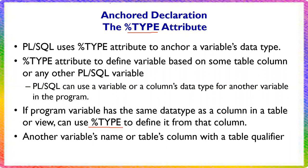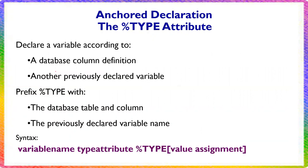The syntax for anchor declaration is used to declare a variable according to a database column definition. You can anchor to a column in the database or to a previously declared variable. The percentage type is used as a prefix. The syntax is: variable_name table_name.column_name%TYPE or variable_name previously_declared_variable%TYPE.